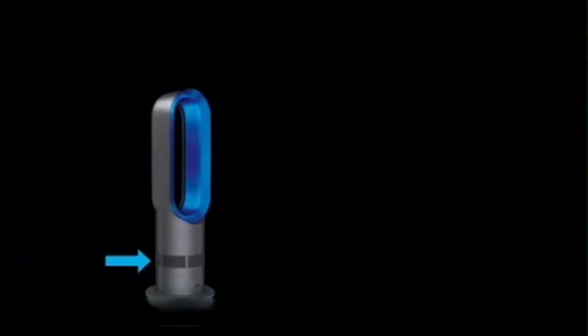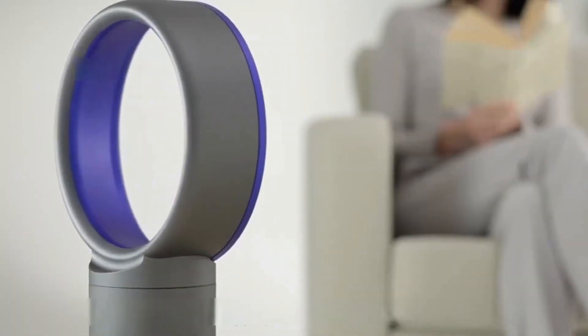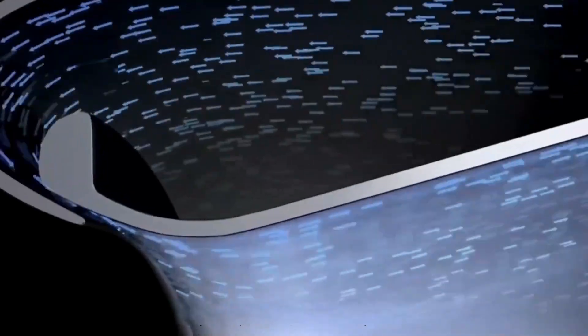The basic principle of a bladeless fan is to use the Coanda effect in fluid dynamics to amplify the airflow. The so-called Coanda effect, simply put, is that the fluid always tends to flow along the ground. When the ground is bent, the fluid will deviate from its original direction of motion.